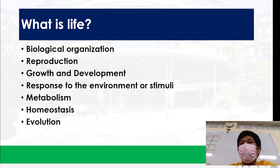So we have seven fundamental properties of life which include biological organization, reproduction, growth and development, response to the environment or stimuli, metabolism, homeostasis, and evolution. Basically, all of these are shared by all living organisms from as simple as a bacterium to as complex as an elephant, a human, a whale, a lion. All of those plants, those living things should possess these seven fundamental properties of life to be considered as a living thing.